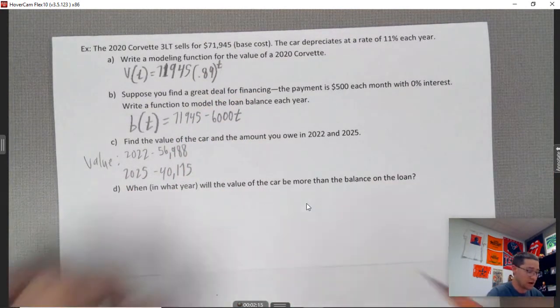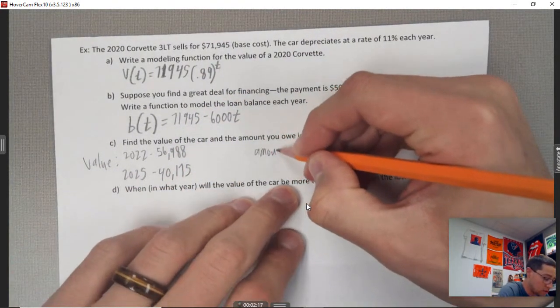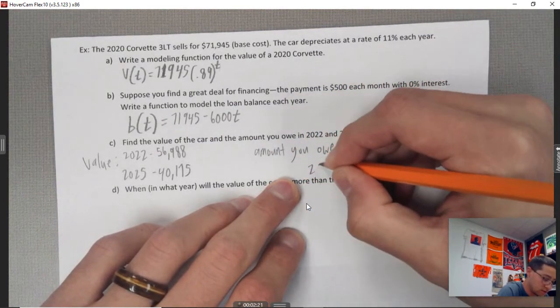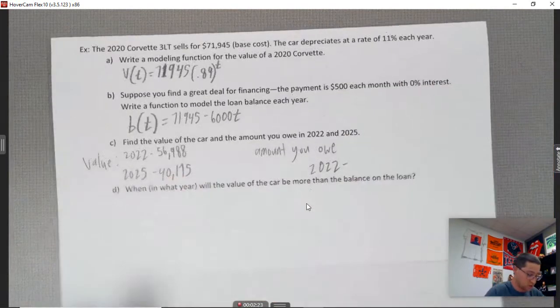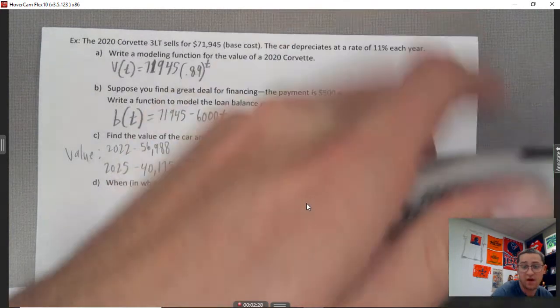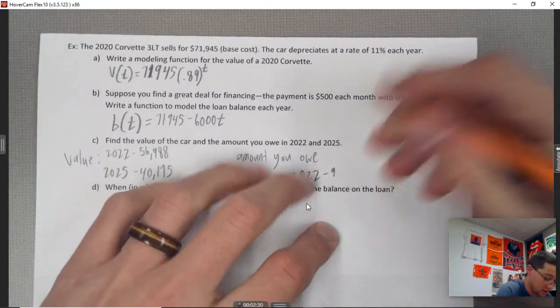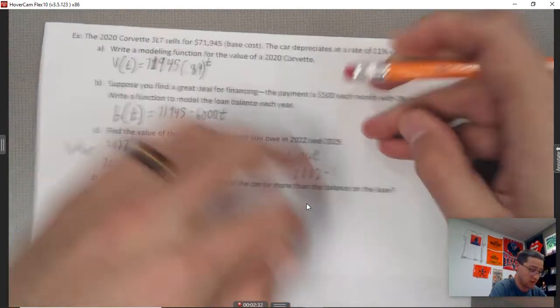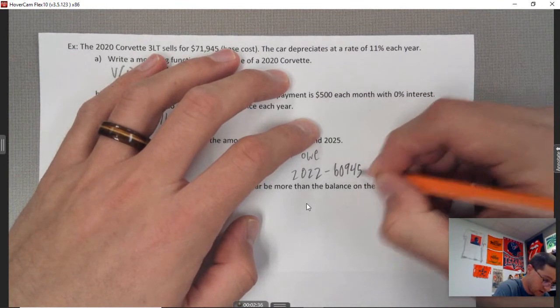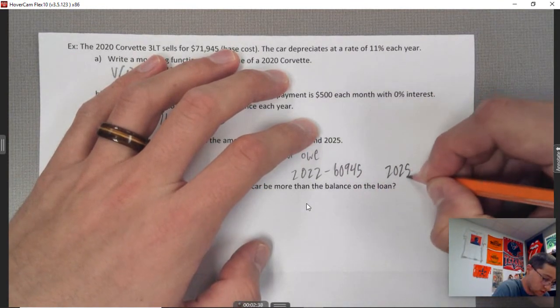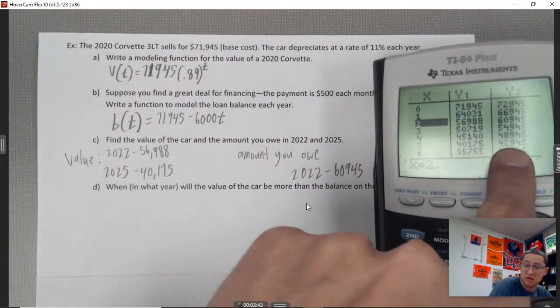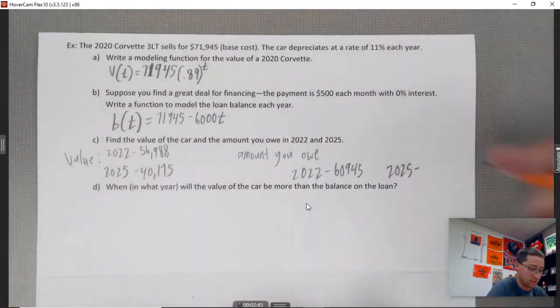Okay, and the amount you owe - and this video is going to be real quick, y'all. 2022, the amount you owe - again that's $60,945. So you got a long way to go after two years; you haven't paid much. $60,945. And then 2025, you've got after five years $42,945.